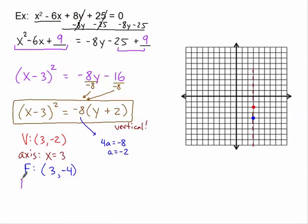Let's find our directrix. The directrix is the equation of a line. If we went 2 units below the vertex to find the focus, now we'll go 2 units above to find the point on the directrix. It looks like our directrix is the equation y equals 0 — the equation of the x-axis.